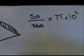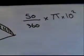At that point, I'm going to reach for my calculator. So I'm going to do 50 divided by 360 times by π times by 10 squared. That gives me 43.6 to three significant figures.